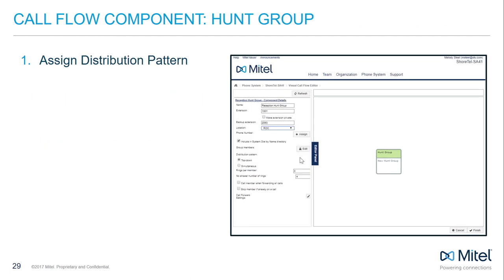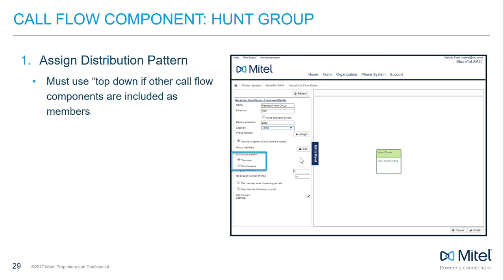Let's complete our hunt group programming by discussing distribution, contingency plans, and scheduling. You have two options for distribution patterns. Top-down rings the hunt group in the order in which the group members are listed, starting from the top and working to the bottom. Simultaneous rings every member in the hunt group at the same time, regardless of group order.